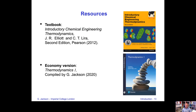Our main course textbook is Introductory Chemical Engineering Thermodynamics, second edition, by Elliot and Lira, available from Pearson's — the second edition was published in 2012. I've made an agreement with Pearson's to produce an economy version of the book. Since this is a large textbook and we only need the first nine chapters for Thermodynamics One, I've compiled those nine chapters into an economy version that is only for students at Imperial College and costs about a third of the price of the original. I recommend you purchase it.